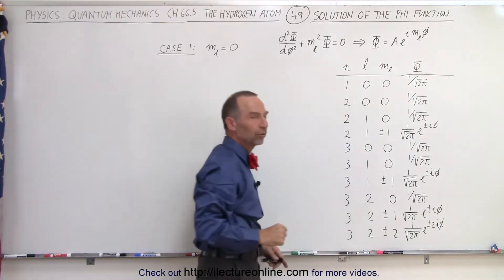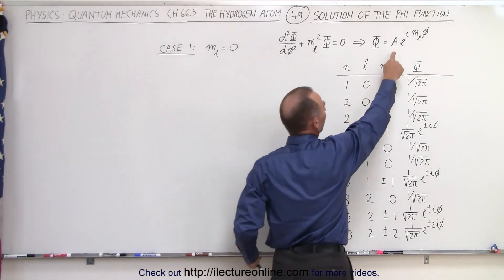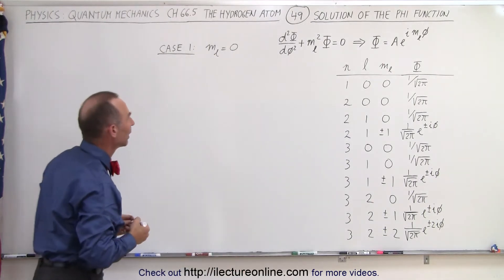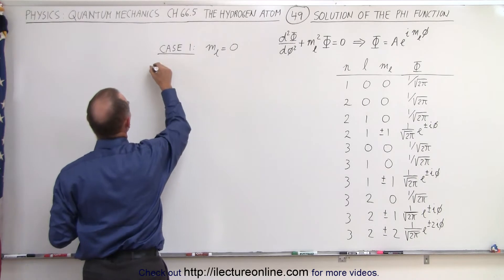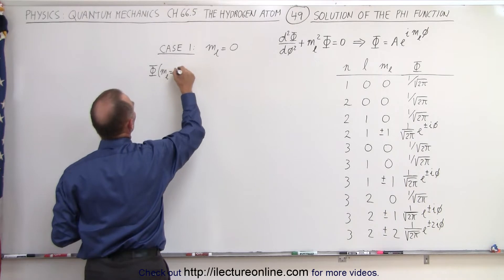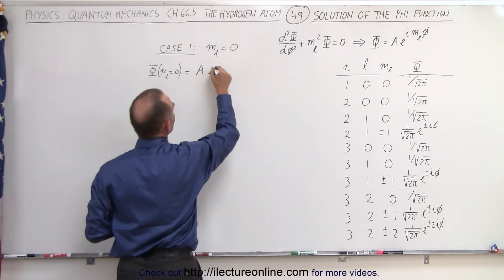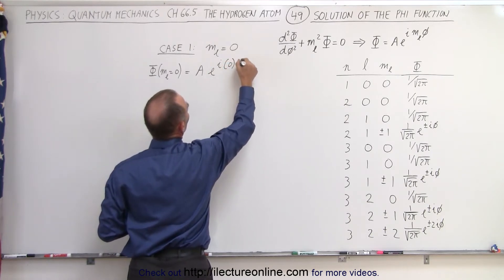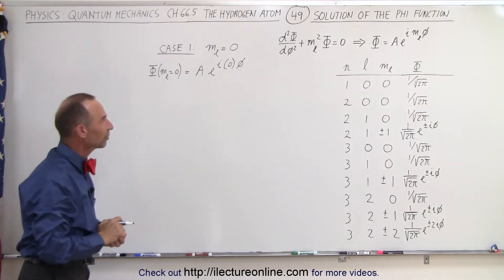First we're going to see how we got the solution to the function when m sub l is equal to zero. We'll need to find the value for the constant a and normalize it. So we take the equation and say that the function phi, when m sub l is equal to zero, is equal to a times e to the i times zero times phi — since m sub l is zero.